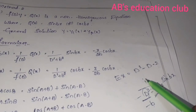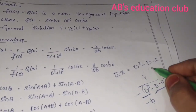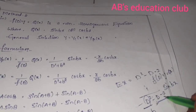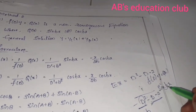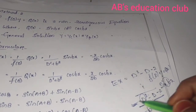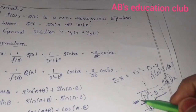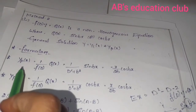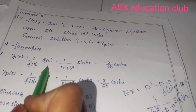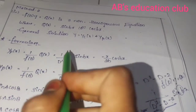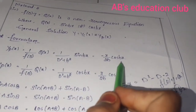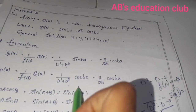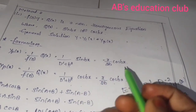For non-homogeneous equations with sin or cos: example f(D)y = Q(x) where Q(x) = sin(dx). Here b² = d², replace D² with −b². If f(−b²) = 0, use special formulas: [1/(D²+b²)]·sin(bx) = −x/(2b)·cos(bx), and [1/(D²+b²)]·cos(bx) = x/(2b)·sin(bx).